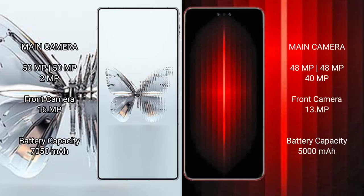The Red Magic 10 Pro Plus has a triple rear camera setup: 15MP plus 15MP plus 2MP, and a 16MP front camera. The Huawei Mate 60 RS Ultimate has a triple rear camera setup: 48MP plus 48MP plus 40MP, and a 13MP front camera. The Red Magic 10 Pro Plus has a 7,050 mAh battery with 120W fast charging, while the Huawei Mate 60 RS Ultimate has a 5,000 mAh battery with 88W fast charging.